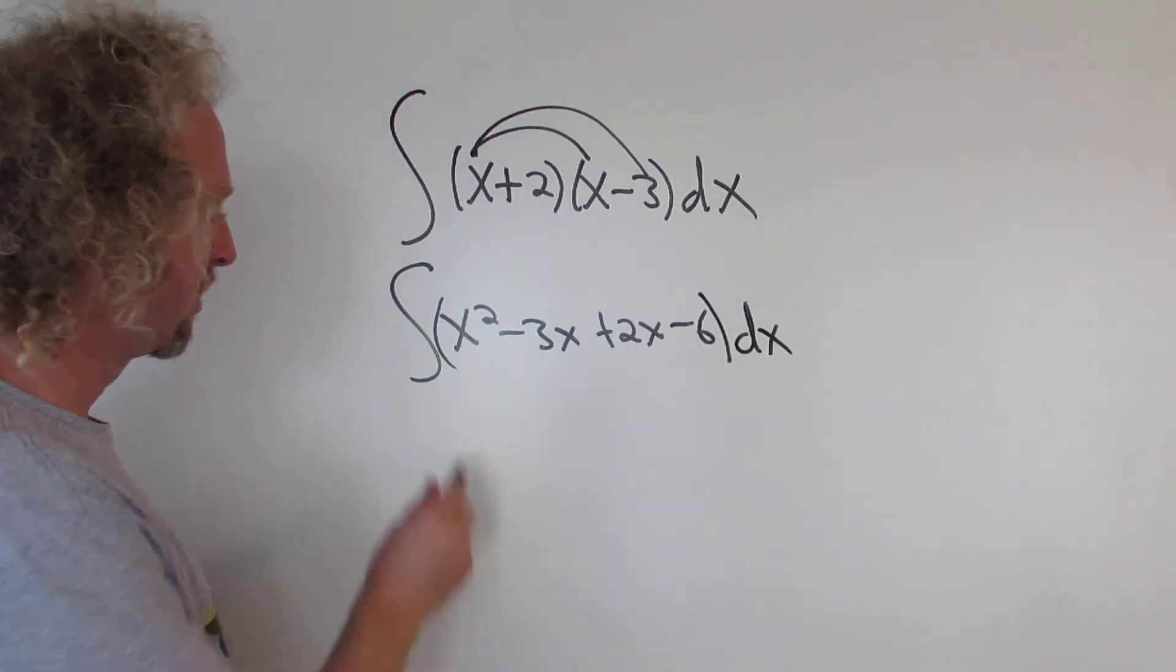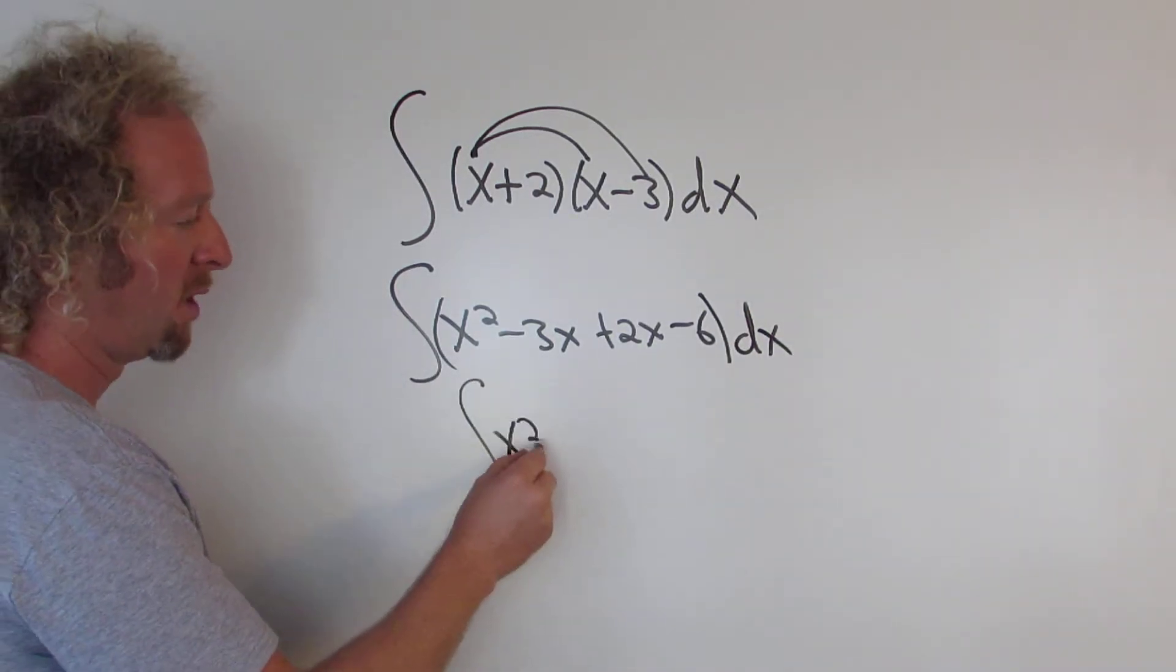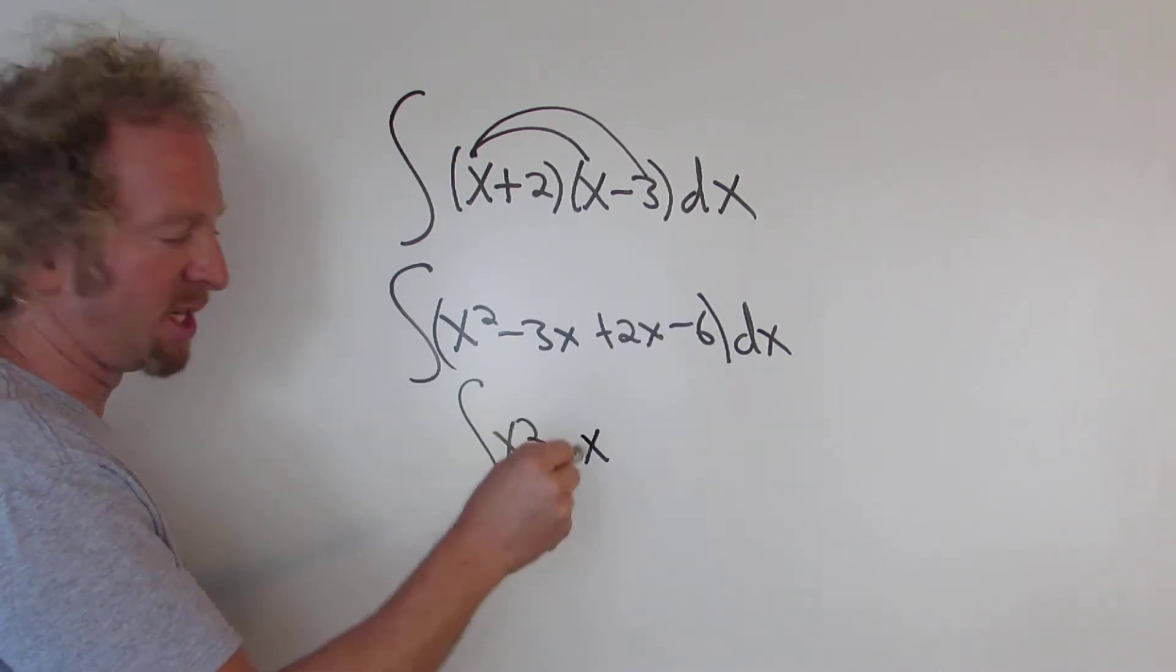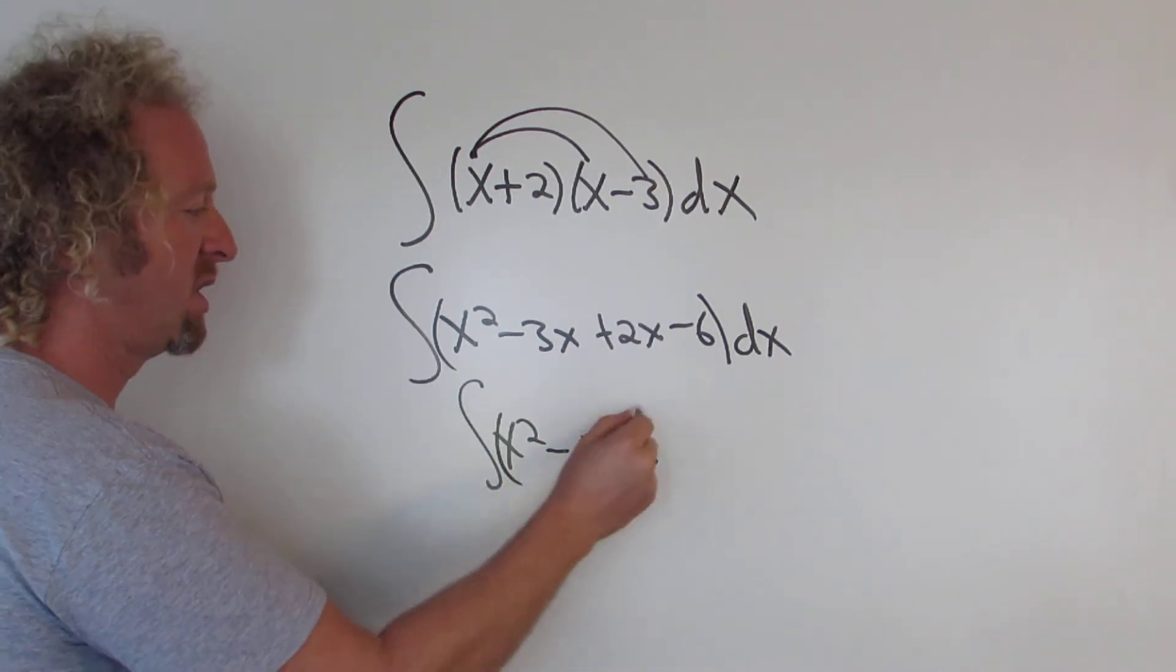Now we'll collect like terms. We have x squared. Negative 3x plus 2x is minus x. And we have the minus 6, parentheses dx.